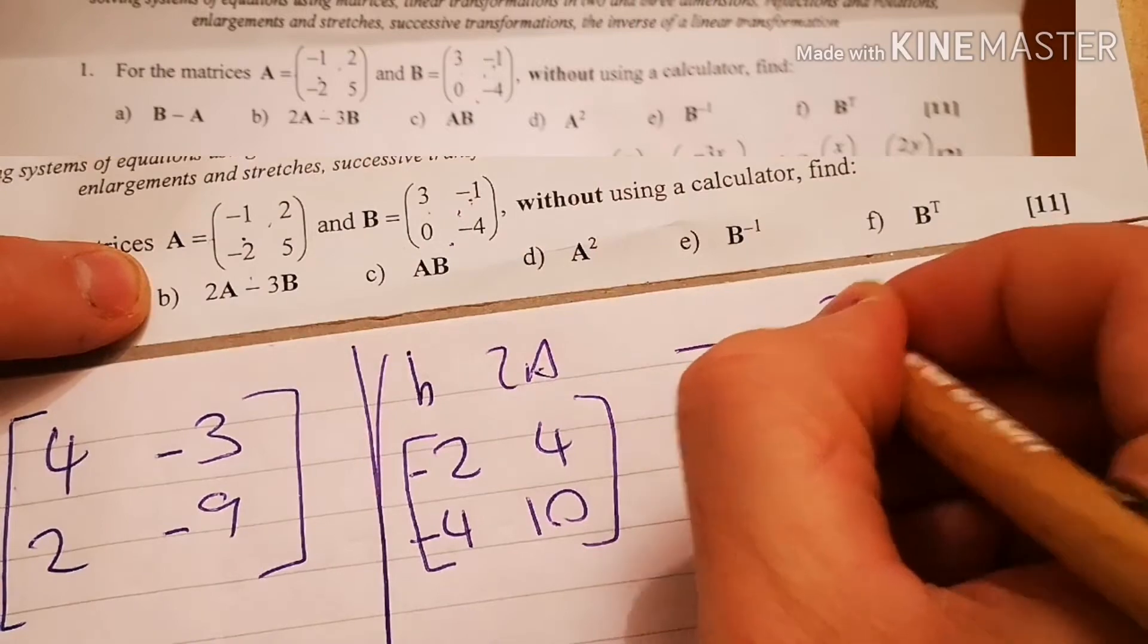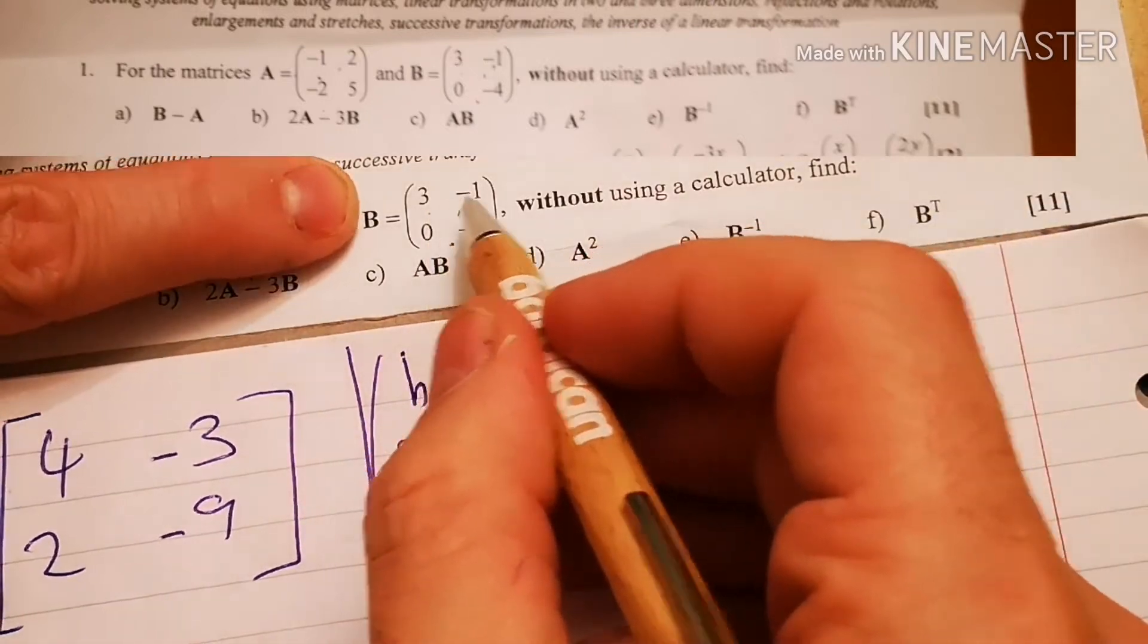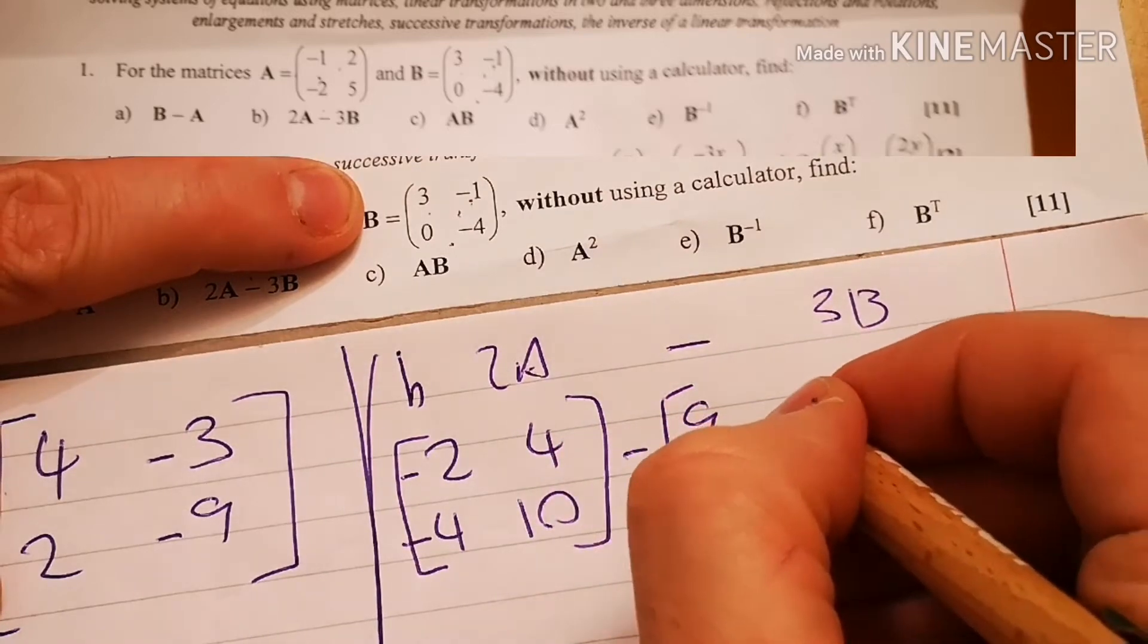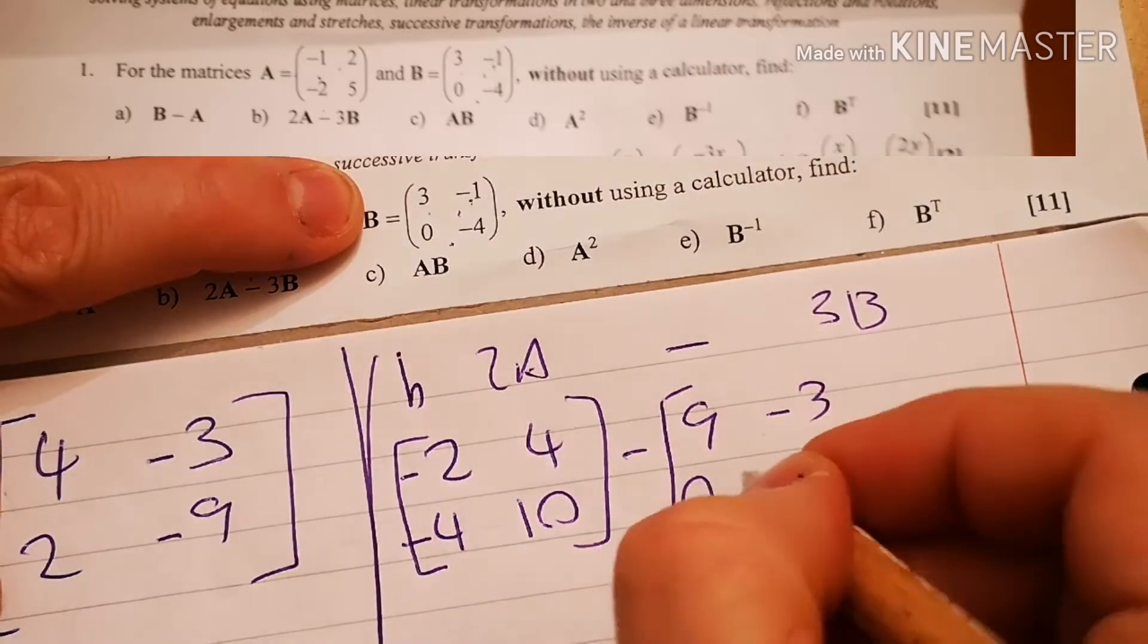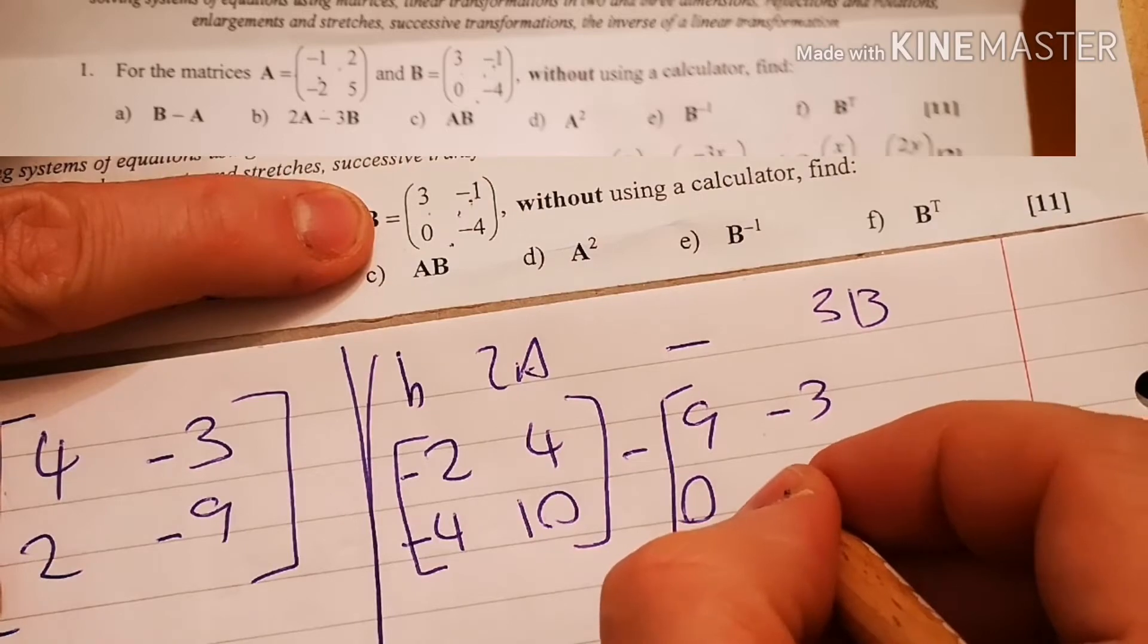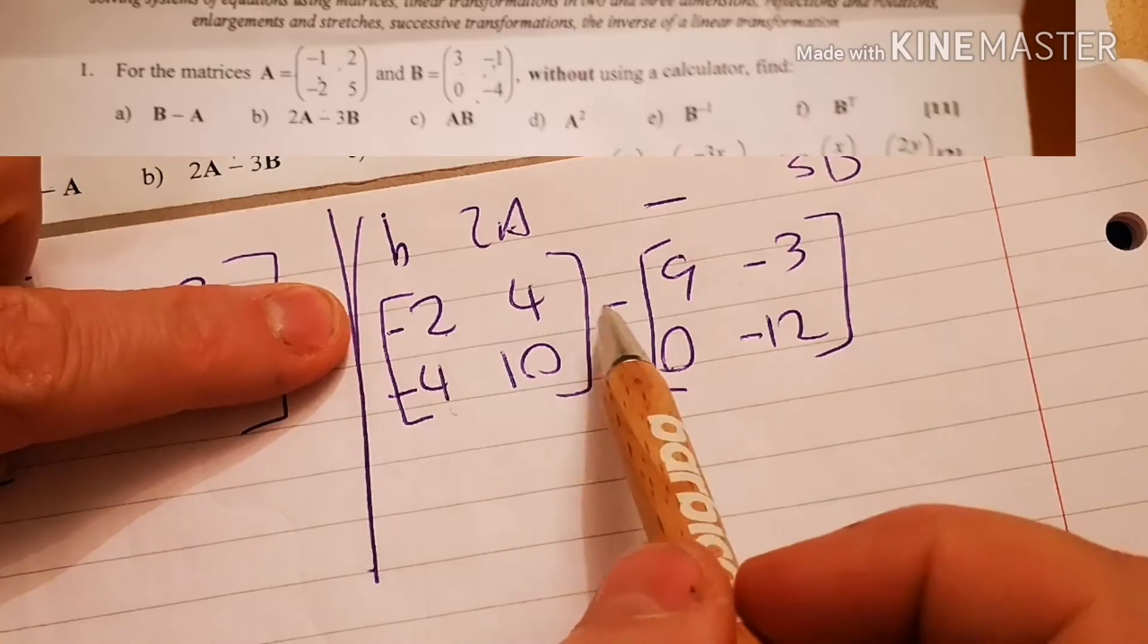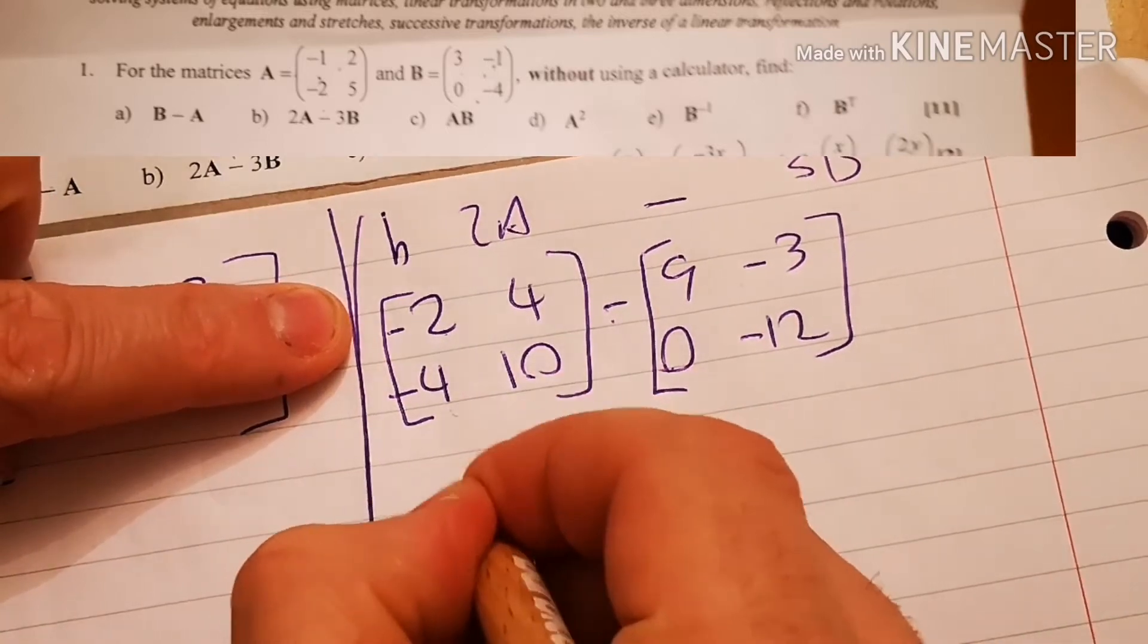And I'm minusing 3B. This B says times it by 3. 3 times 3 is 9. Minus 1 times 3 is minus 3. 0 times 3 is 0. Minus 4 times 3 is minus 12.